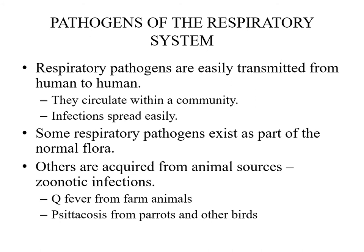Some respiratory pathogens exist as part of normal flora, while others are acquired from animal sources—called zoonotic infections. Zoonotic infections involve transmission of an infectious agent from animals to humans. Examples include Q fever, which comes from farm animals, and Psittacosis (Chlamydia psittaci), which comes from parrots and other birds and causes lower respiratory tract infection in humans.